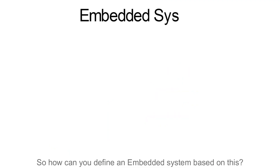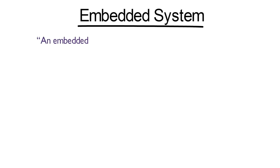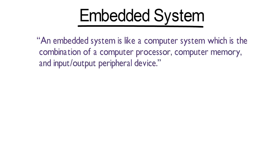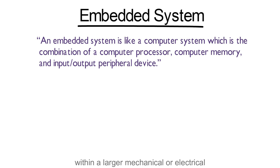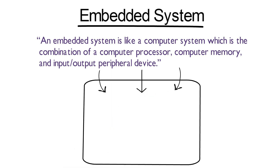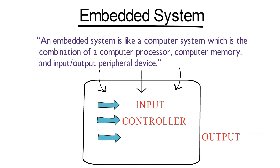So how can you define an embedded system based on this? As given in Wikipedia, an embedded system is like a computer system which is the combination of the computer processor, computer memory and input-output peripheral devices, and such a system has a dedicated function within a larger mechanical or electrical system. In simple terms, the embedded system is an intelligent electronic circuit or device that consists of three important parts: input, controller and output.